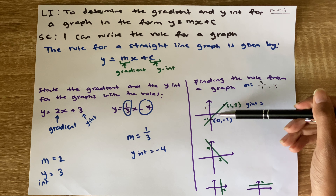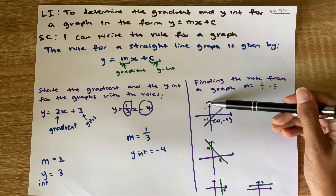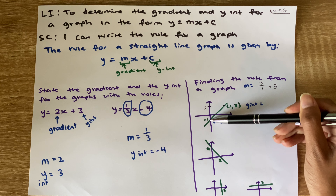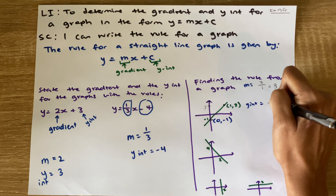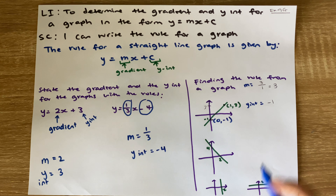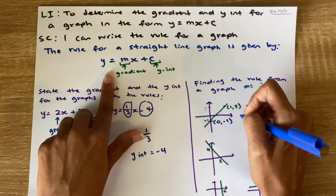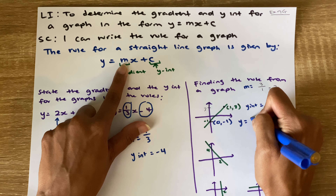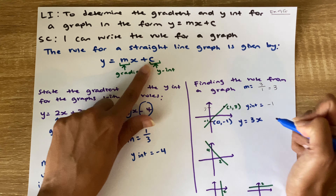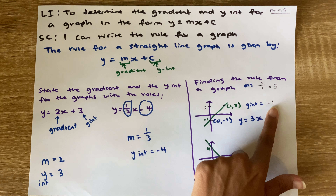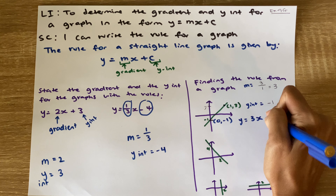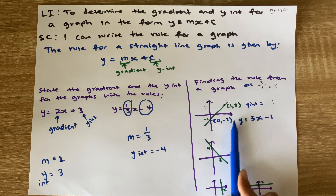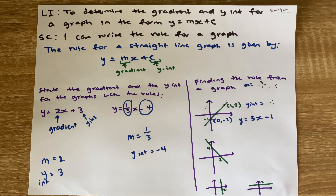So my gradient is going to be 4 over 1, which is 4... the speaker identifies the gradient as 3. And my y-intercept — where does my green line cross my y-axis? It crosses at negative 1, so my y-intercept is negative 1. When I write down my rule in this format: y equals 3x, and then my y-intercept is negative 1, so I write negative 1. I've now written the rule for my graph.